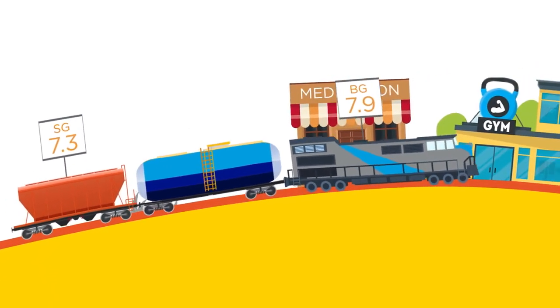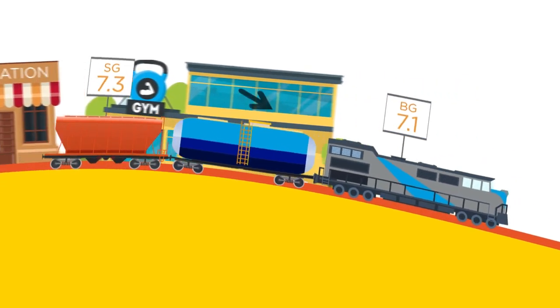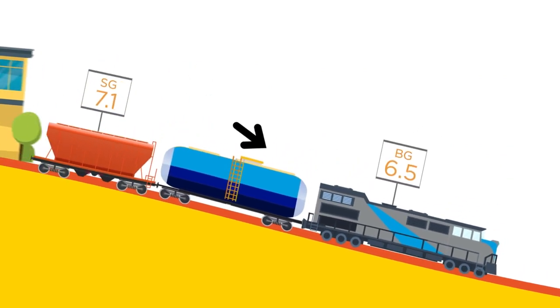Now, after insulin or exercise, the train may start to head down the hill, but blood glucose still leaves with sensor glucose lagging behind.